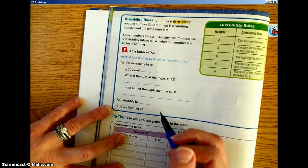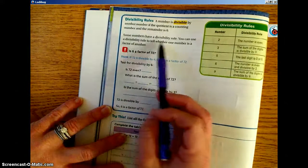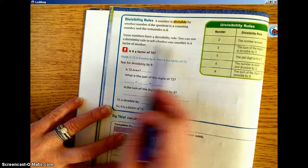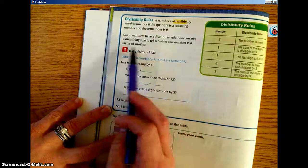If the sum of the digits is divisible by 9. Those are some quick ways to check and see. Some numbers have a divisibility rule that I just went over. You can use a divisibility rule to tell whether one number is a factor of another.